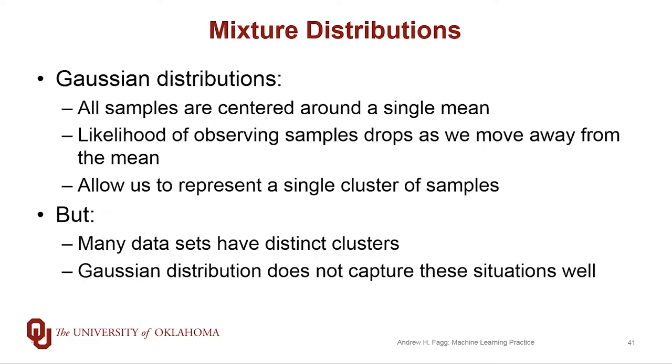These distributions are really good at representing individual clusters that have an ellipsoid type structure to them, but in lots of scenarios, our data sets don't really have this structure. Many data sets have scenarios where they might have a cluster of points in one area, another cluster in another area, and they're not even connected to one another. Our Gaussian distributions in and of themselves really aren't good at capturing these kinds of interesting scenarios.